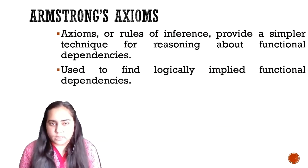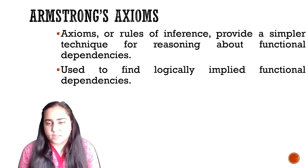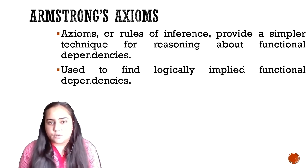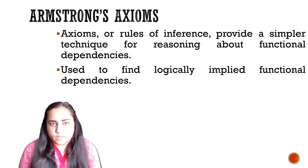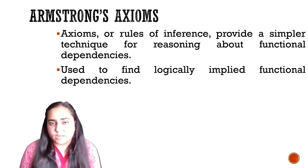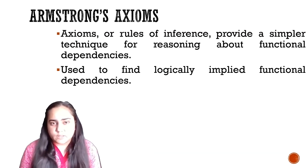When you want to find all logically implied functional dependencies from a given dependency, that is where you will be using Armstrong's axioms. You'll understand the significance of this when you study normalization, because in normalization we try to eliminate functional dependencies as much as possible, but we cannot do that unless dependencies which are already extra can be removed. Armstrong's axioms allow you to find something called a canonical cover, which reduces the set of dependencies by applying some rules, making your normalization more effective and efficient.